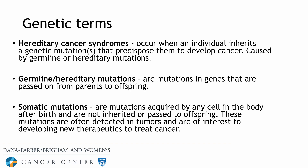I thought it would be important to start by defining some basic genetic terms. Hereditary cancer syndromes occur when an individual inherits a genetic mutation that predisposes them to develop cancer. This can be caused by a germline or hereditary mutation — mutations in genes that are passed on from parents to offspring.